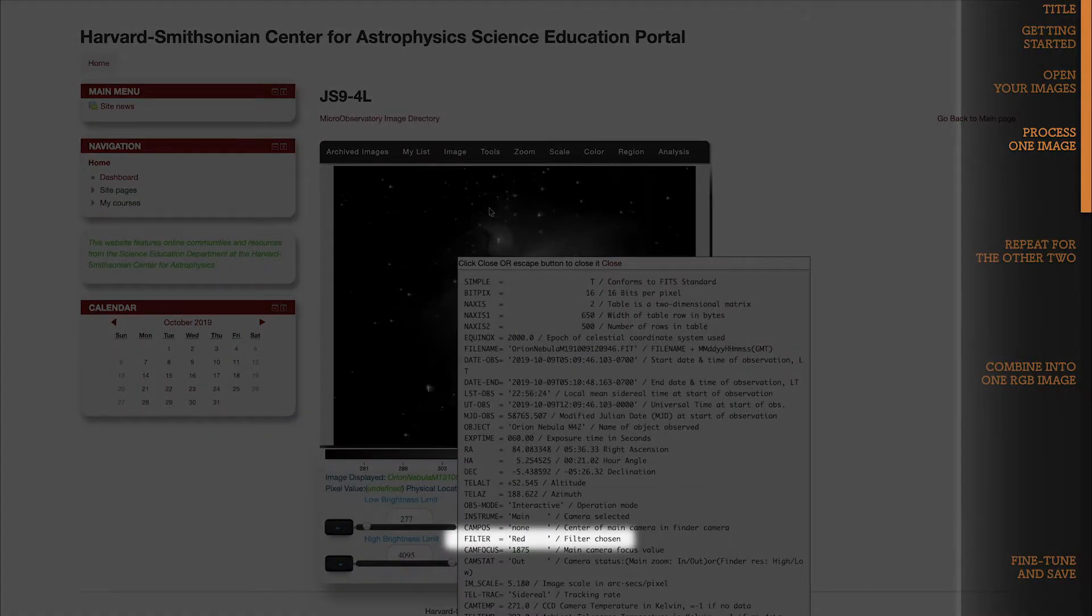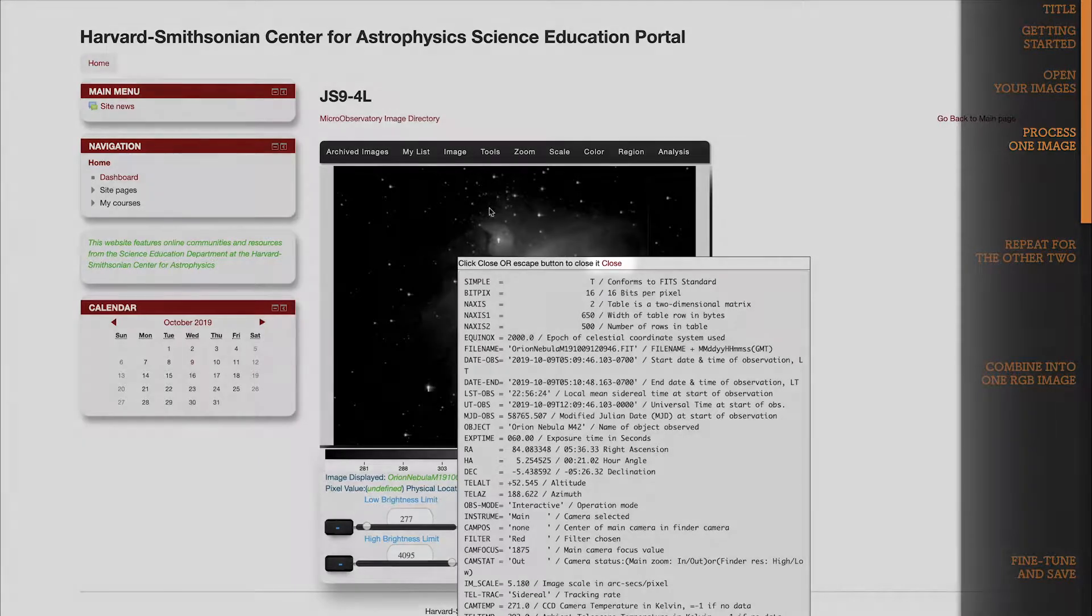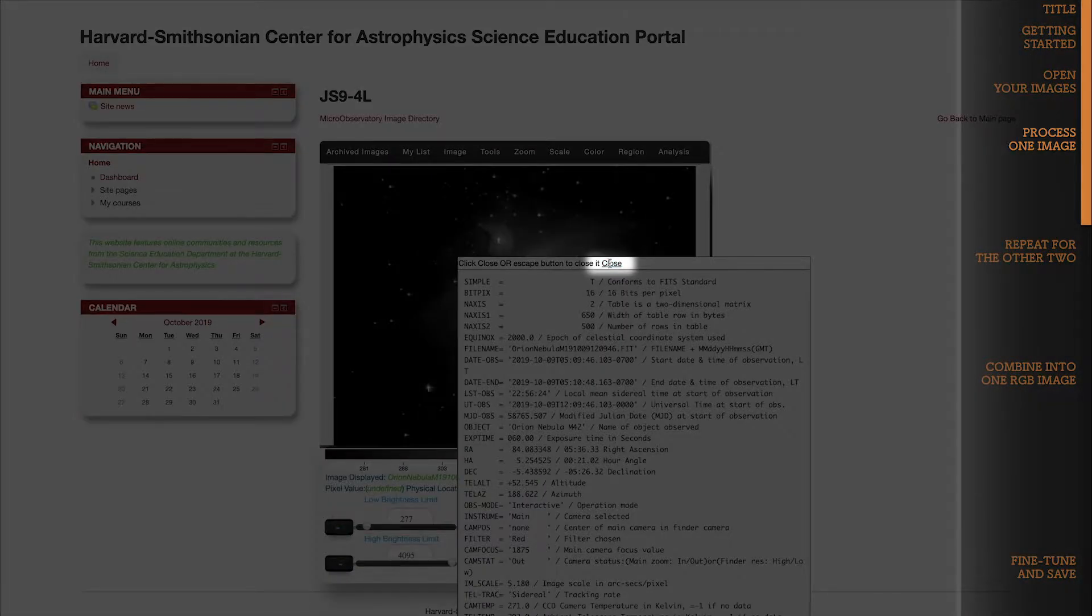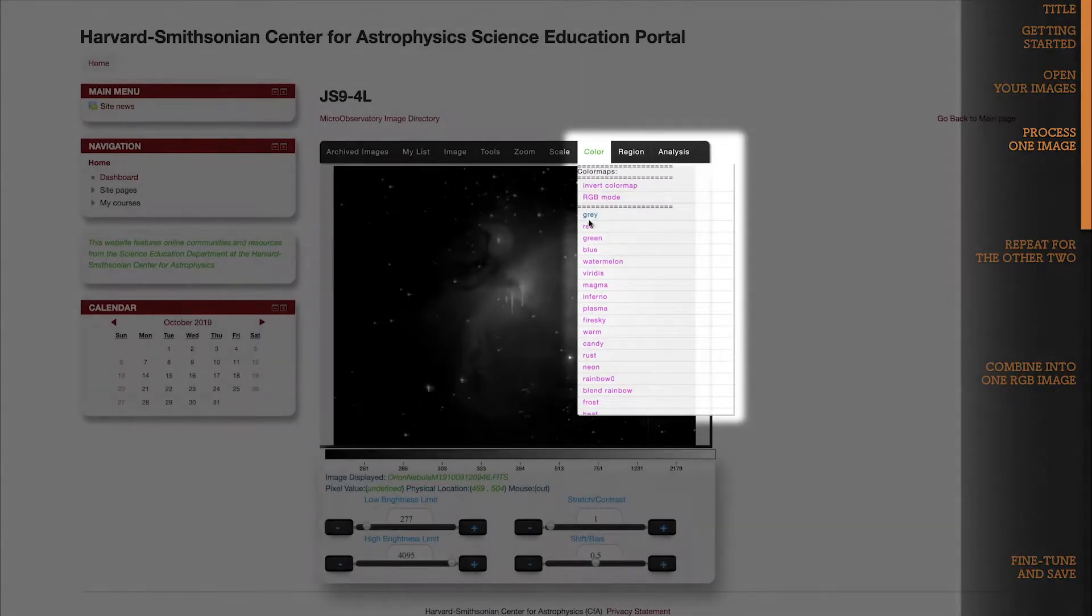Right, so here we are, filter equals red. Now we know this image was taken with the red filter, which only let red light through to the light detector. So close this FITS info, either click the word Close here or just press the Escape key, go up to the Color dropdown, and choose Red.